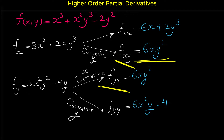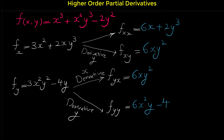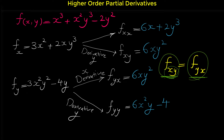So when you calculate one of these mixed derivatives, the value of the other one is almost always the same. This theorem in calculus is known as Clairaut's theorem, or sometimes Schwarz's theorem. Based on Clairaut's or Schwarz's theorem, if f sub xy and f sub yx are continuous, then these two are equal to each other. We call these types of derivatives the mixed derivatives.